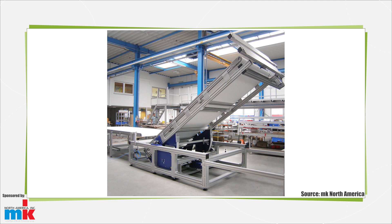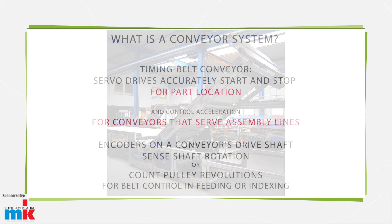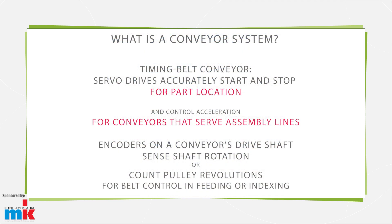Where the conveyor takes the form of a timing belt conveyor, servo drives accurately stop and start the setup to provide precise part location. They also let engineers control acceleration, which works well for conveyors that serve assembly lines.